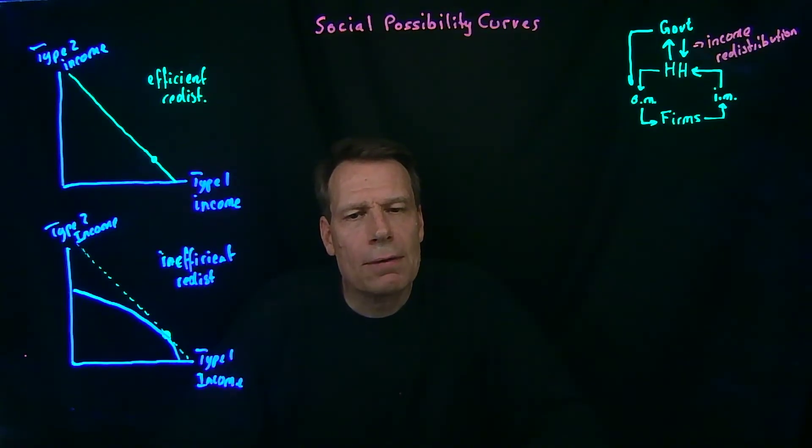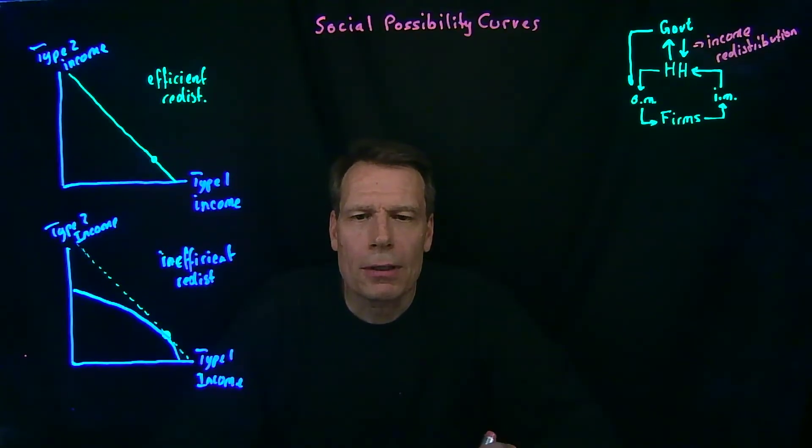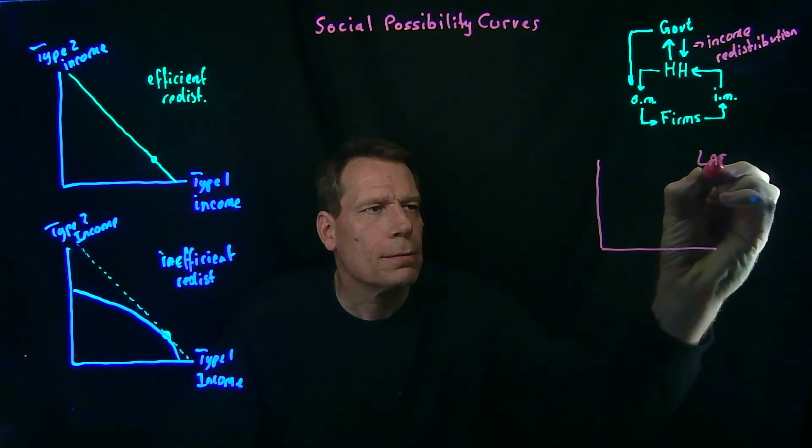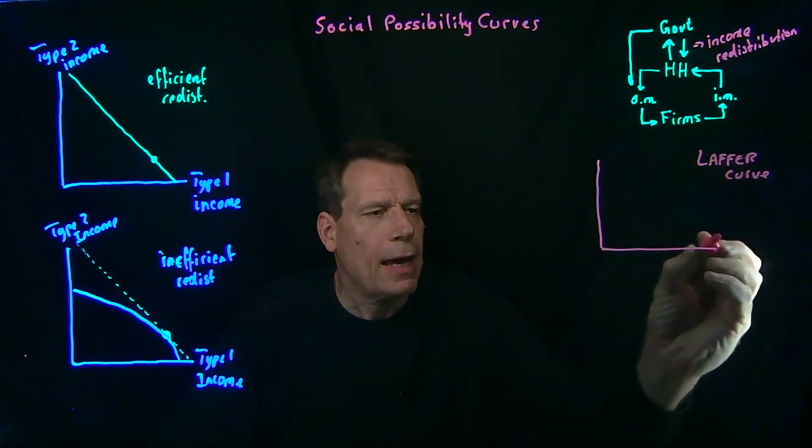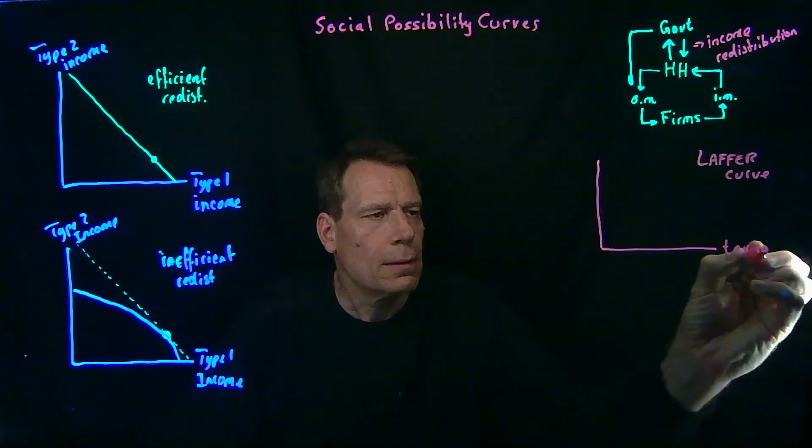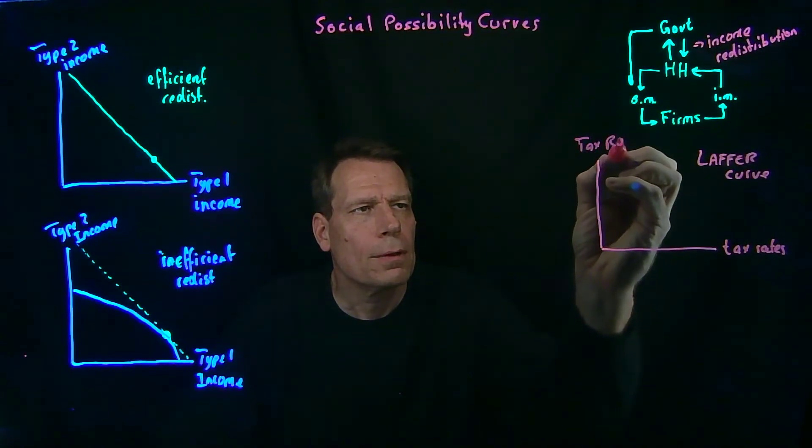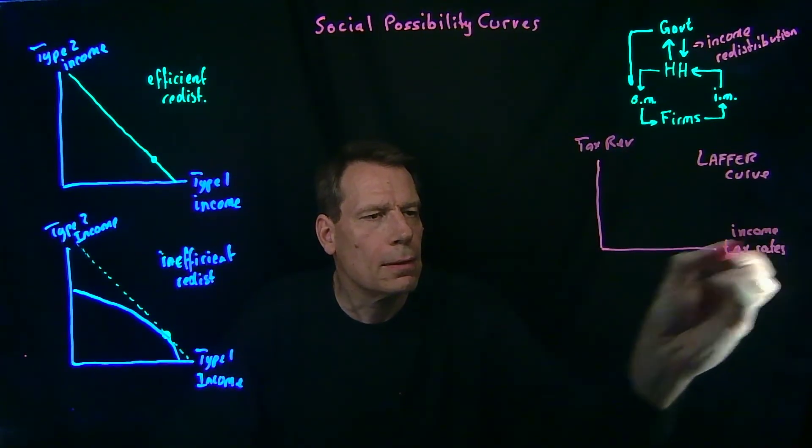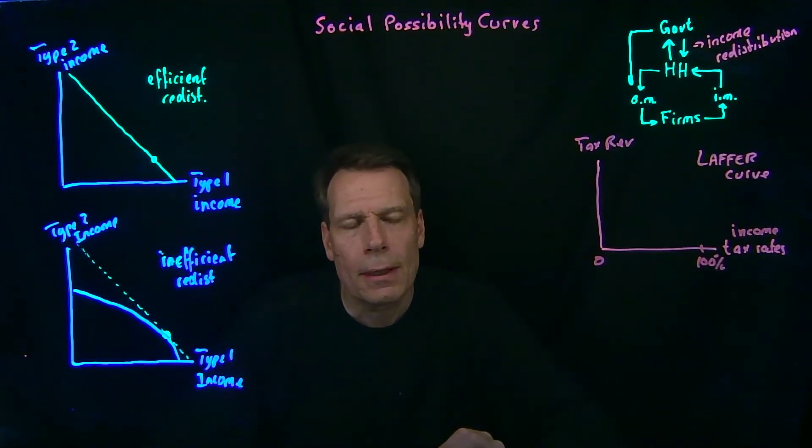But things could get even more dramatic than that. Remember back when we talked about taxes and tax revenue? We mentioned the Laffer curve. So the Laffer curve has tax rates on the horizontal axis and tax revenue on the vertical. And we could think, for example, about income tax rates that could go from 0 to 100%.